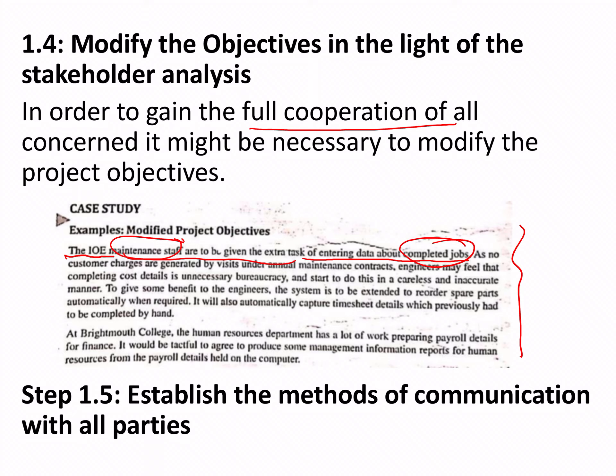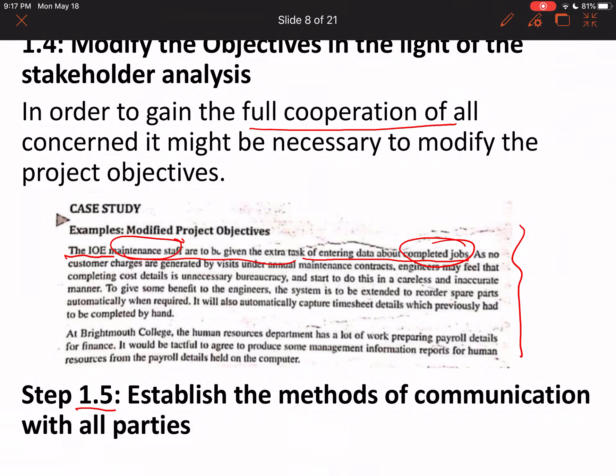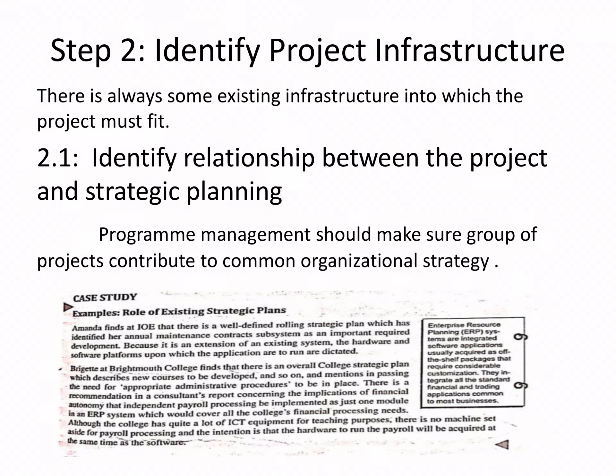Step 1.5: establish methods of communication with all parties. It is expected that all parties communicate properly with each other — only then will they be able to successfully implement all the objectives. With that, step one is complete, and we move to step two: identify project infrastructure.